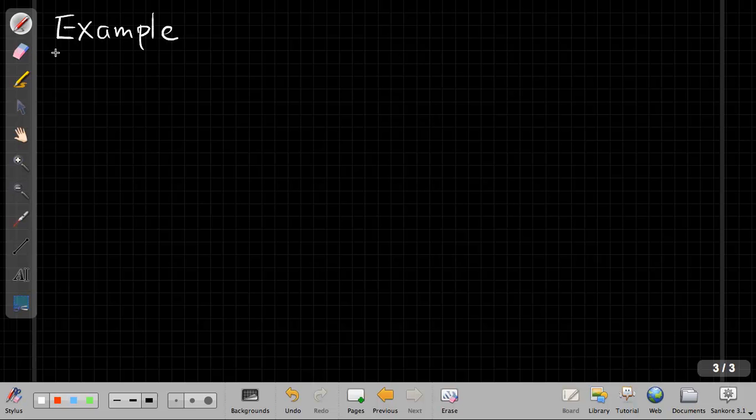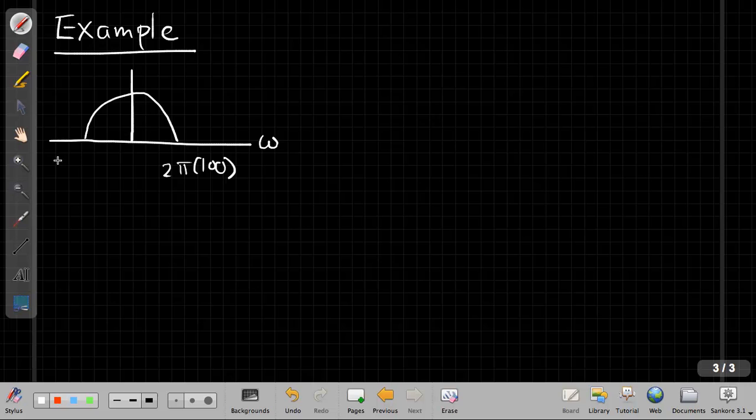So let's go onto a new page here and look at an example. So imagine our continuous time spectrum is this kind of half circle. And imagine it goes from plus or minus, in continuous time frequencies, plus or minus 2 pi times 100. So this would actually be 100 hertz, because I divide angular frequencies by 2 pi to get radiant frequencies, and this is height 1.